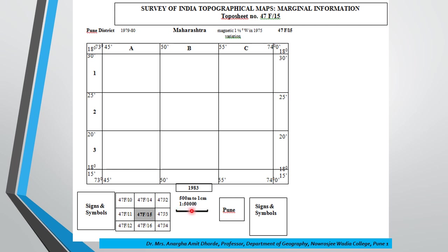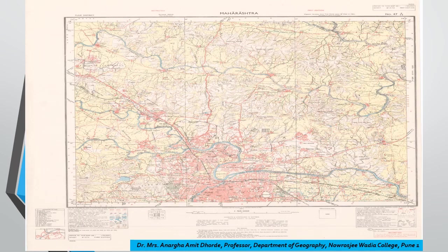Apart from that, you have the scale, the signs and symbols, and certain years. One year given is 1979–80 and another below it is 1983. The latter relates to the year of publication of the toposheet, whereas the former relates to the year of surveying of the area to make this particular toposheet. The same toposheet is being enlarged here so we can look at each element one by one.